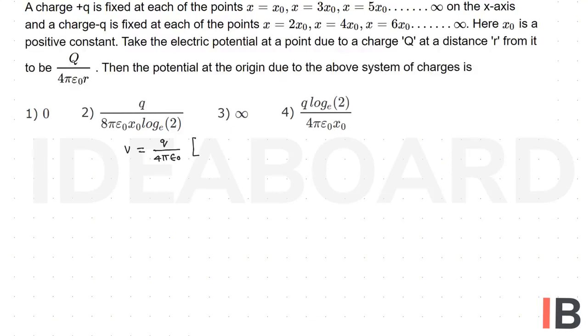The charges are alternatively positive and negative. Let us write: 1 by 1 minus 1 by 2 plus 1 by 3 minus 1 by 4 plus and so on.